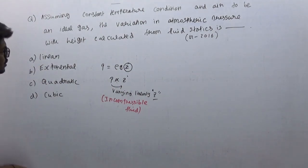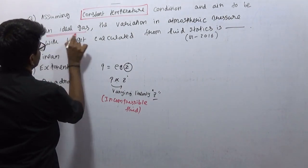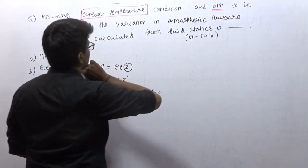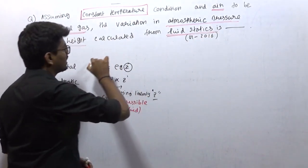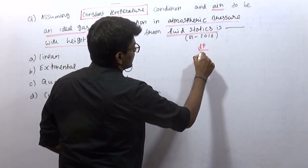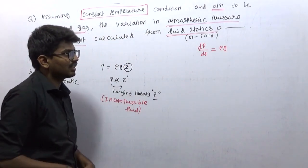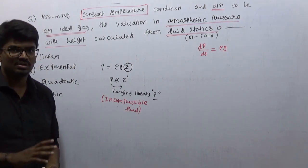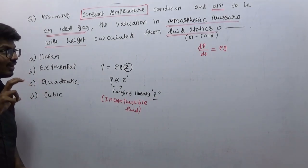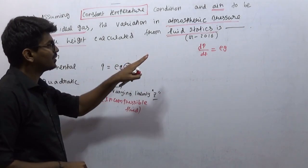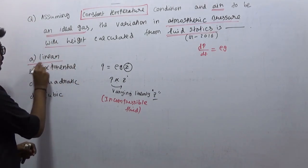The question asks: assuming constant temperature condition and treating air as an ideal gas, what is the variation of atmospheric pressure with height? From fluid statics, the hydrostatics law gives dp/dz equal to ρg for a static fluid. Now, most students without reading the question properly will directly switch to the linear option when they see 'variation of pressure with respect to height' — but here the linear option is a trap.